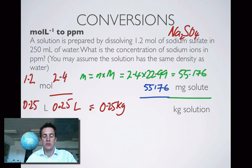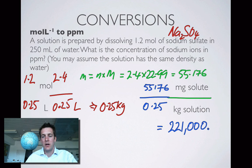It doesn't equal 0.25 kilograms, but it equates to 0.25 kilograms. And if I put that there, 0.25, then I've got my milligrams of solute divided by kilograms of solution. Plug these numbers into my calculator and what do I find? It's 221,000 parts per million.